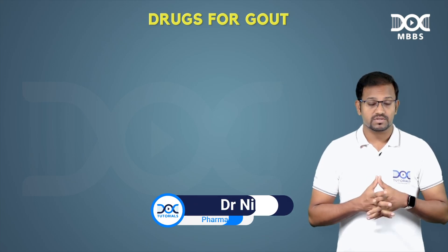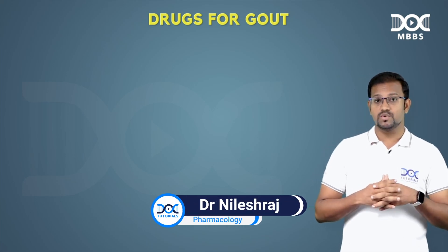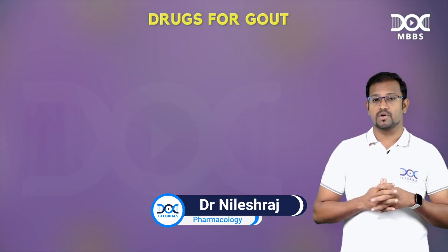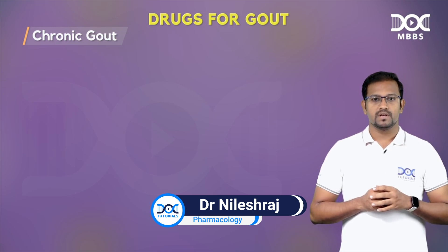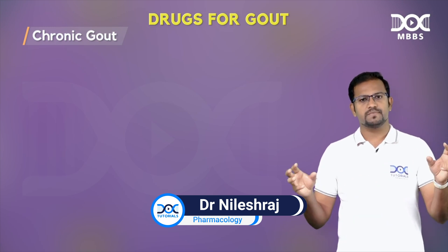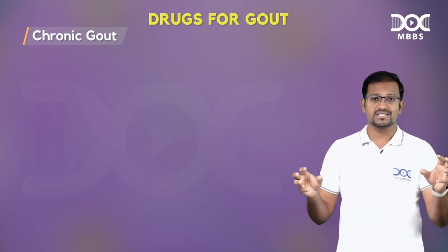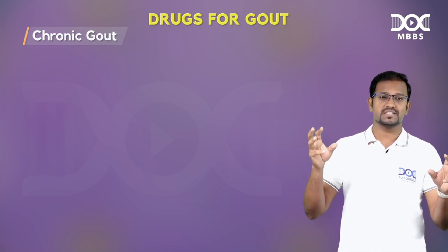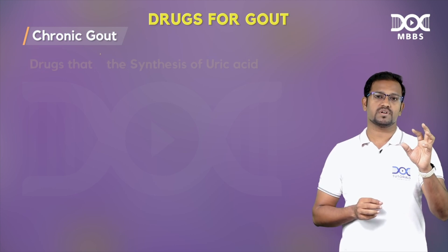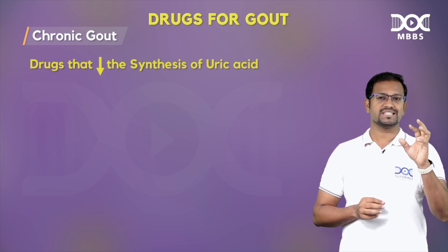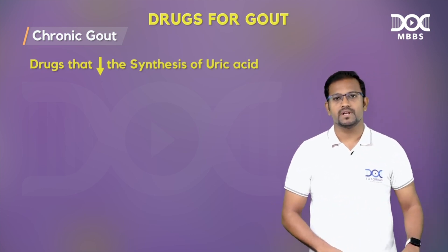The treatment of chronic gout involves two different concepts: drugs which decrease the synthesis of uric acid, and drugs which increase the excretion of uric acid. Let's first talk about drugs which decrease the synthesis of uric acids.